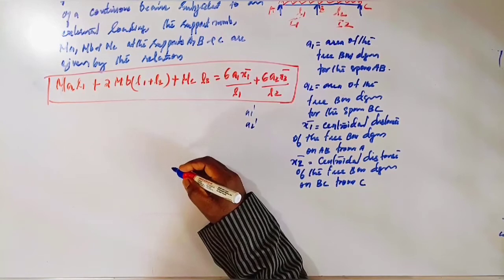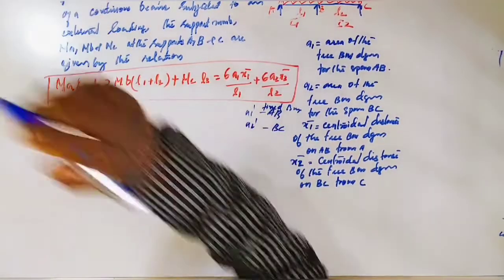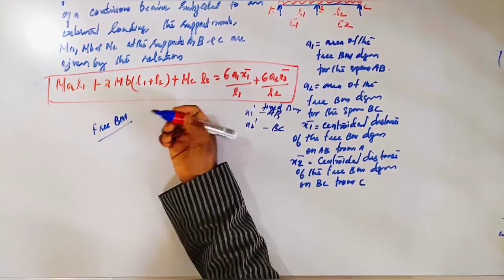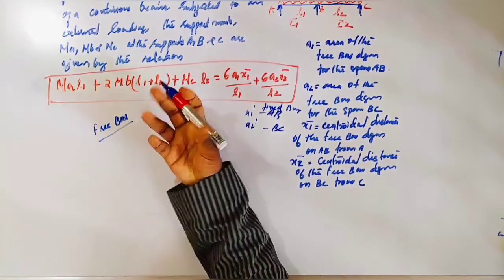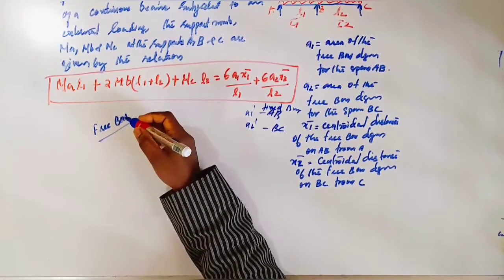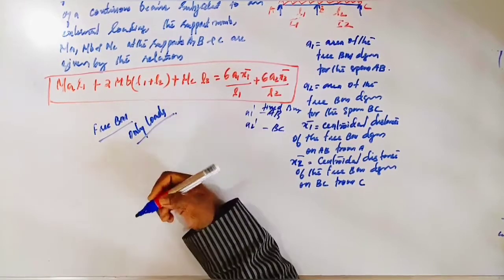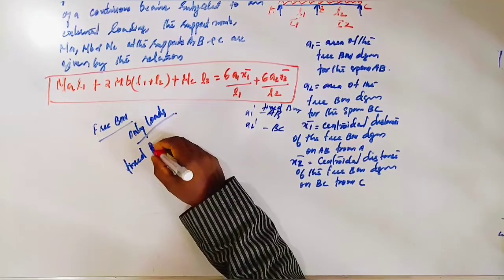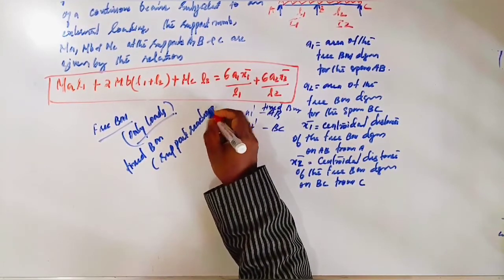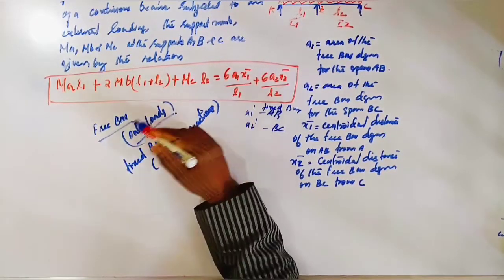A1' and A2' are the areas of the fixed bending moment diagram for spans AB and BC. If you have learned this in SA1 or MOS, the free bending moment is computed considering only the applied loads on a simply supported span. The fixed bending moment accounts for the support reactions or end moments.